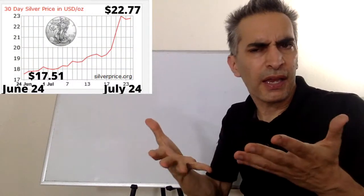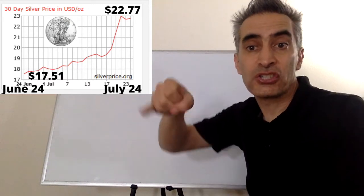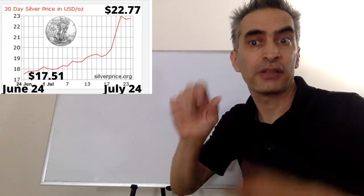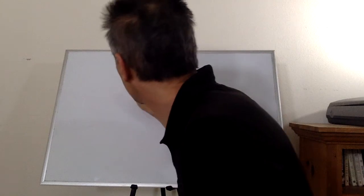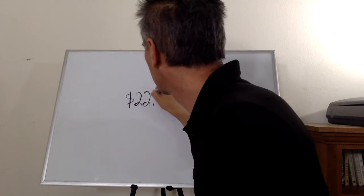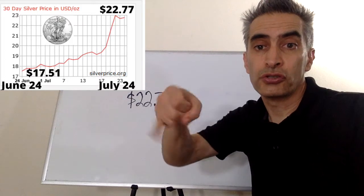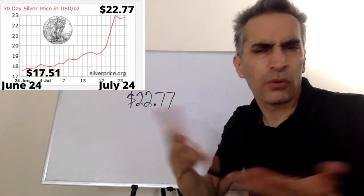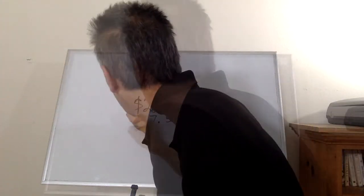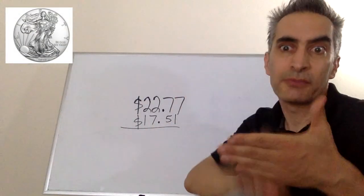How do we calculate the percentage growth for silver? We start with July 24th, and the final price was $22.77. Next, the initial price on June 24th, which was $17.51. What are we going to do now? Subtract.